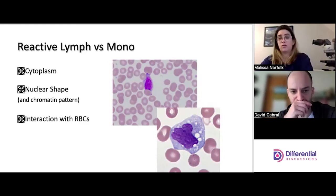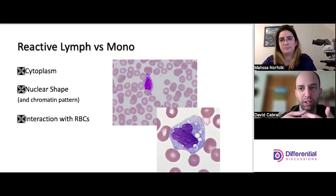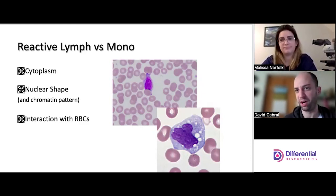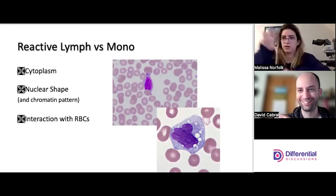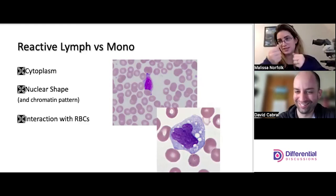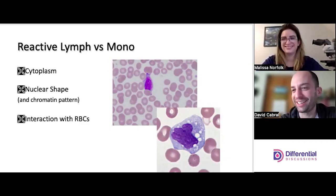Chromatin pattern: it's going to be clumped in the lymph — but you have to understand that stretching will lighten the color and density, though it still won't have the lacy character of a mono. Reactive lymphs have really prominent white striations — like scratch marks on a chalkboard. Monos have the lacy pattern. Then there's the interaction with red cells: reactive lymphs grab and pull, while monos tend to push. This is the one that fooled me, which I think is actually nice because this stuff isn't easy.